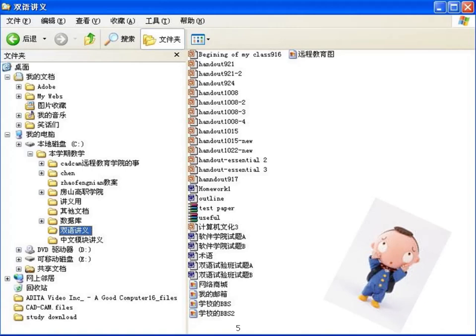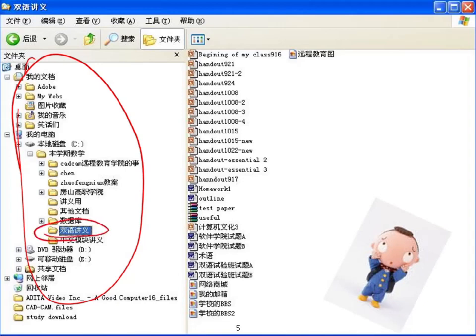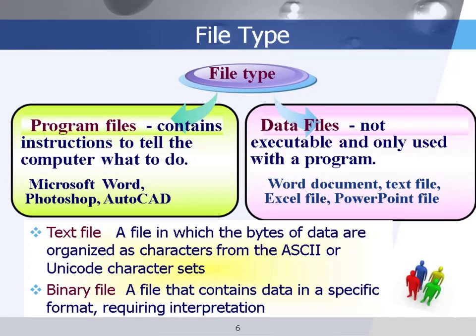The left side shows the directory tree and the right side lists some of the files, including one directory. Each file is given a name and a different icon for different file types. Files have different types and different functions — some are program files and some are data files. Program files contain instructions to tell the computer what to do. Data files contain data, and to use them you need application software to open and manage the file.